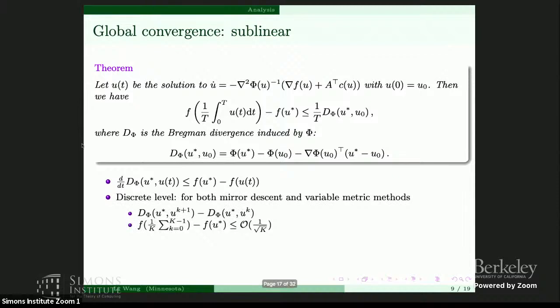A similar result can be obtained at the discrete level for mirror descent — that's actually how we obtained the continuum result. What's more interesting is that we can obtain a similar result for the general variable metric method: instead of analyzing the time derivative of the Bregman divergence, we analyze the difference of the Bregman divergence. The convergence result is that if you evaluate f at the algorithmic sum, it converges to the minimum at the rate of 1 over square root of k.